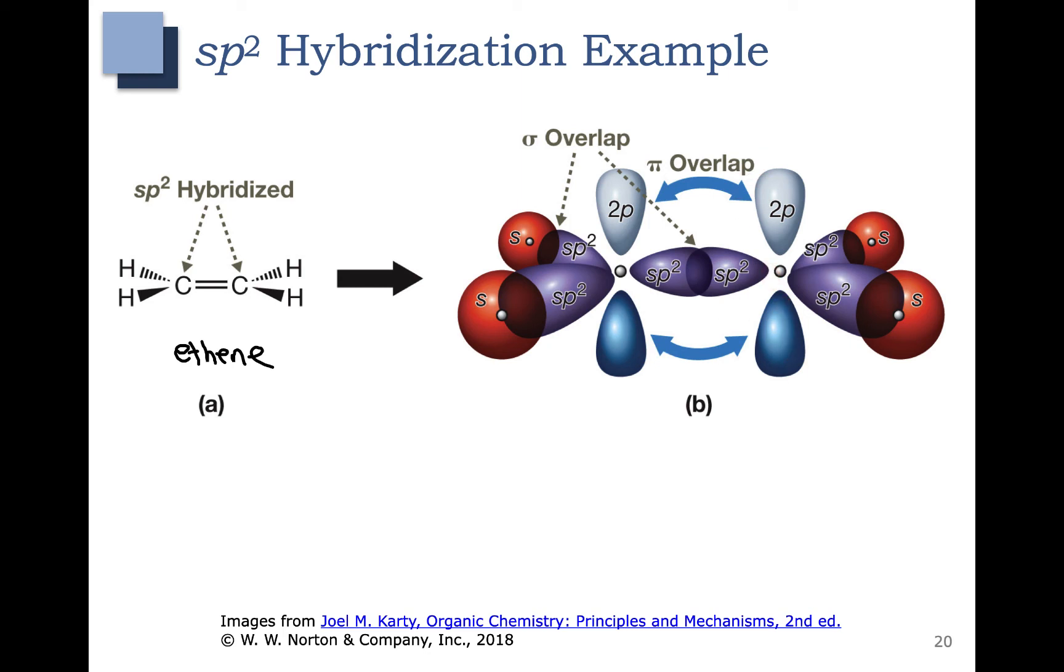The two p orbitals overlap to form the pi bond. The sigma bond is formed by the overlap of the sp2 hybrid orbitals. Each carbon has three sp2 hybrid orbitals forming three sigma bonds. One, two, three. So that means that the carbon-carbon double bond consists of one sigma bond and one pi bond.